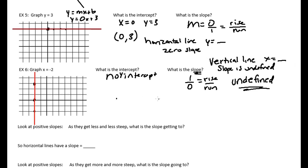You can plug in something for x and see what y comes out to be, or plug in a number for y and see what x comes out to be. Since there's no x in y equals three, y will always be three no matter what x is. And in x equals negative two, x will always be negative two no matter what y is.